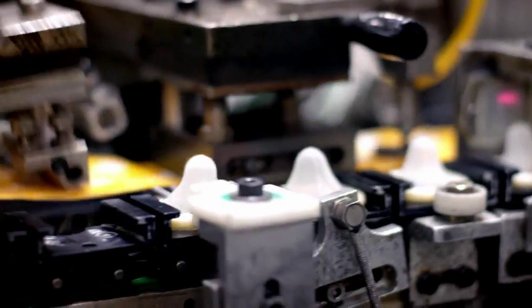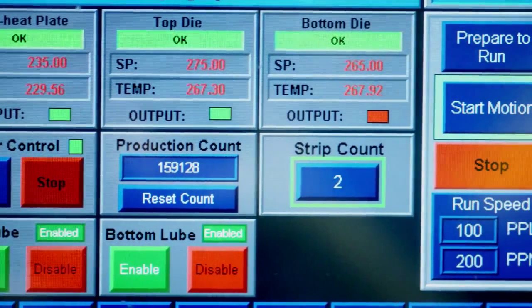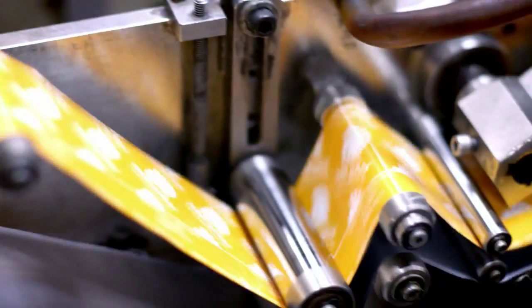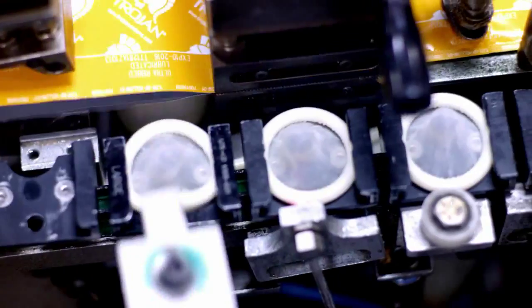Here, the condoms are placed in their final protective wrapper. These machines both electronically test and then wrap each condom. As the condoms are wrapped, they're simultaneously injected with a lubricant to maximize performance, protection, and pleasure.